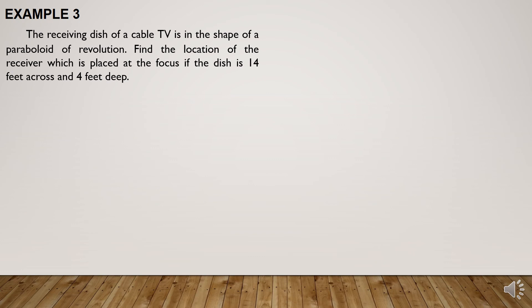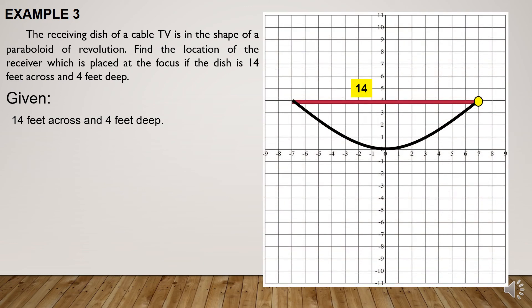Example number 3. The receiving dish of a cable TV is in the shape of a paraboloid of revolution. Find the location of the receiver, which is placed at the focus, if the dish is 14 feet across and 4 feet deep. Given: 14 feet across and 4 feet deep. The diameter of the opening is 14 feet, so the radius is 7 feet. One of the endpoints of the diameter has the height from the vertex of 4 feet, so the coordinates are (7, 4).